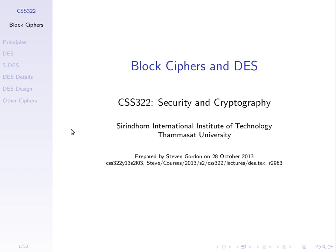Before we start to go into block ciphers and the main example of the block cipher DES, we'll just recap on what we know from classical ciphers. We went through several examples of very simple ciphers, starting from 2,000 years old — the Caesar cipher — and there were transposition techniques.